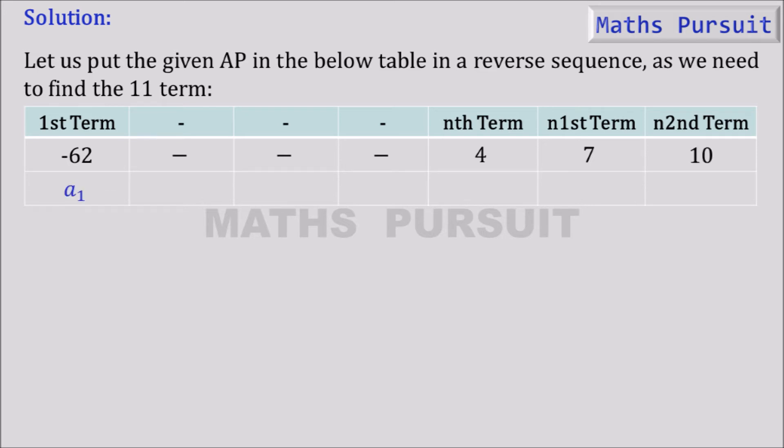Now naming a₁ to -62 and again leaving three blanks as we don't know what could be there, and putting aₙ to nth term, aₙ₁ to n first term, and aₙ₂ to n second term.